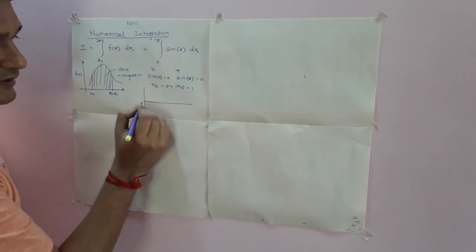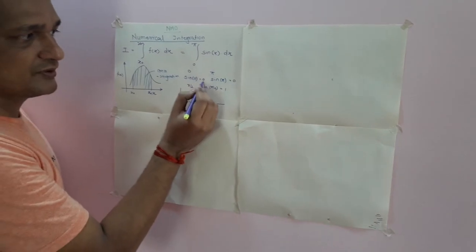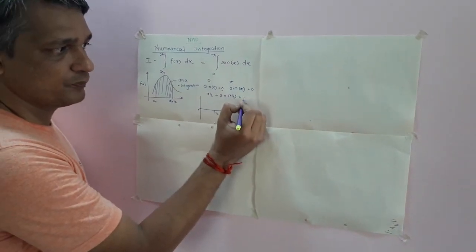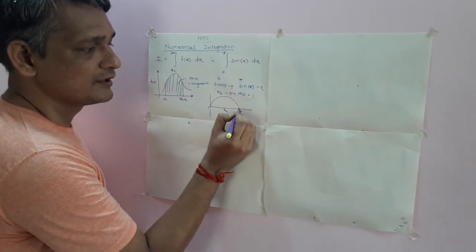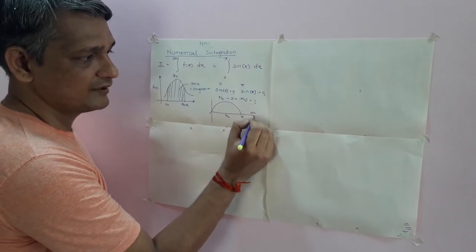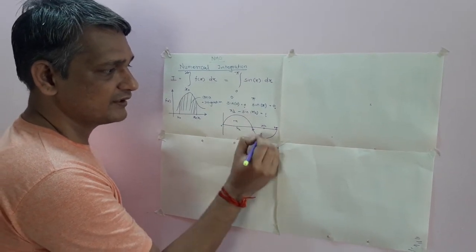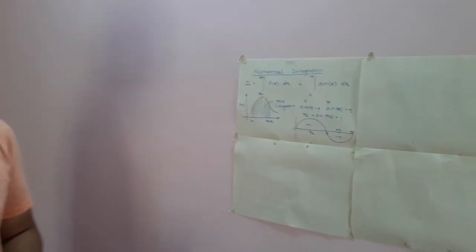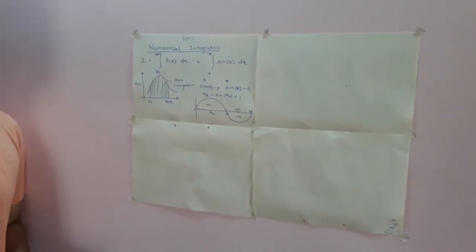Now let us plot this curve. The x-axis has values 0, π/2, and π. Sin(0) = 0, sin(π/2) = 1, and sin(π) = 0. We get this type of curve. Further, at 3π/2 and 2π, we get the continuing curve. This is a positive domain and this is a negative domain. If you add these two domains, you get the total area under the curve from 0 to 2π.